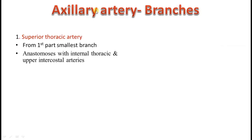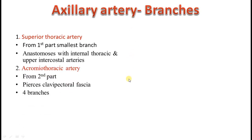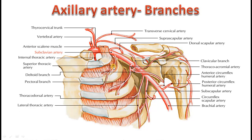The first branch is the superior thoracic artery from the first part — the smallest branch, mainly supplying your pectoral region and anastomosing with internal thoracic and upper intercostal arteries. The second branch is the acromiothoracic artery from the second part, which pierces the clavipectoral fascia and divides into four branches, remembered as A-P-C-D: Acromial branch, Pectoral branch, Clavicular branch, and Deltoid branch. Here you can see the superior thoracic artery anastomosing with the intercostal arteries and with the internal thoracic artery, which is a branch from the first part of the subclavian artery.